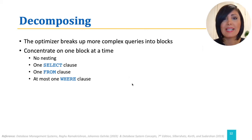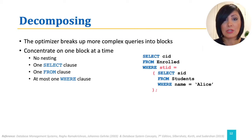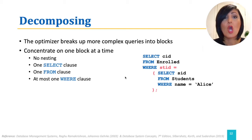For example, assume we have the query with the inner query SELECT SID FROM STUDENTS WHERE NAME IS ALICE, and the outer query that is trying to find tuples with values of the attribute STID equal to the SID returned by the inner query. This query includes a subquery expected to produce a scalar value. The inner query, SELECT SID FROM STUDENTS WHERE NAME equals ALICE, is considered one block.